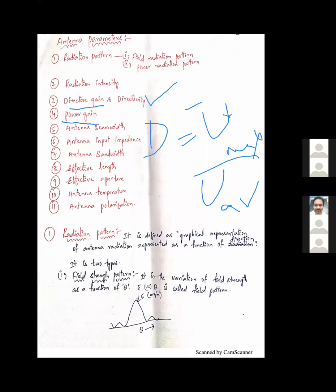We have discussed antenna beam width — HPBW and BWFN — as well as antenna input impedance. Antenna bandwidth is defined as the ratio of resonant frequency to quality factor: Bandwidth = F_R / Q.